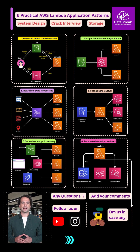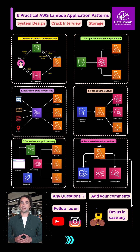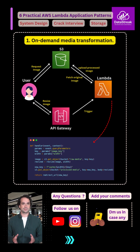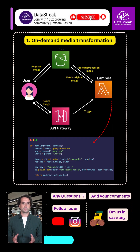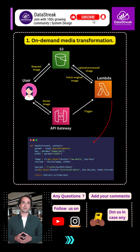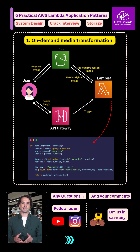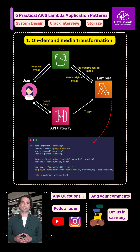Let me explain six practical AWS Lambda application patterns. Pattern 1: On-demand media transformation. Instead of storing multiple image sizes, we store one original image in S3. When a user requests it, Lambda dynamically resizes or converts it. Less storage, more flexibility.